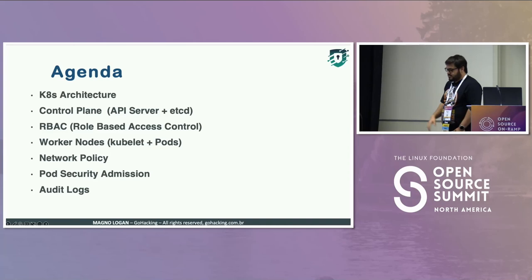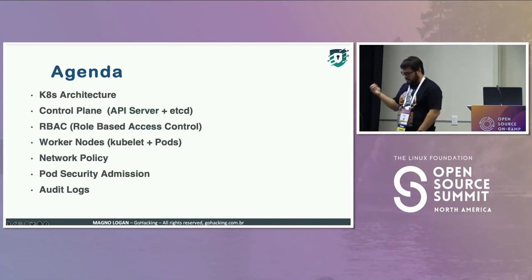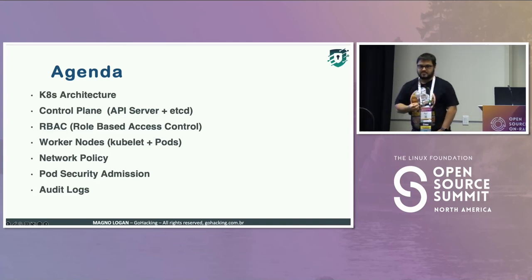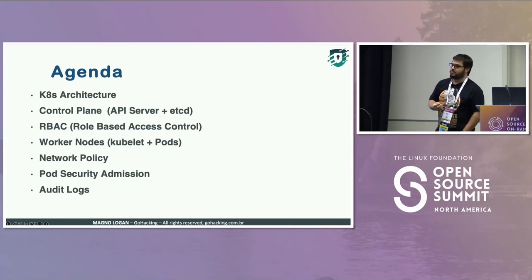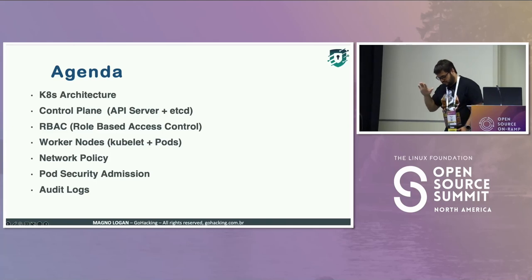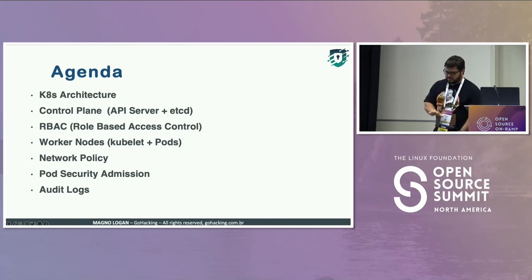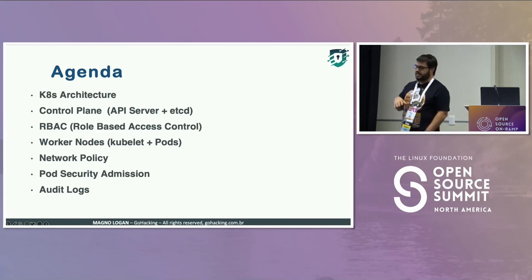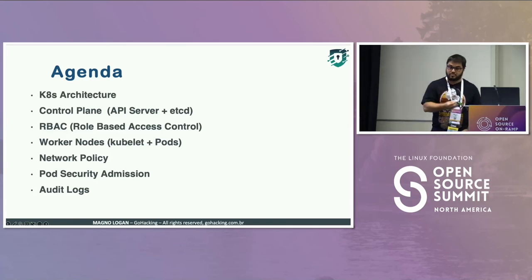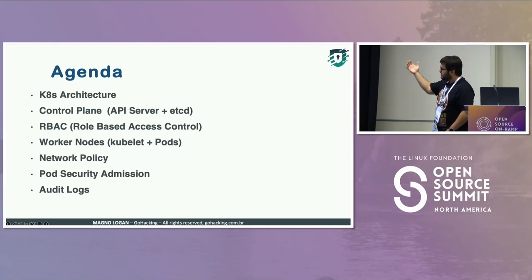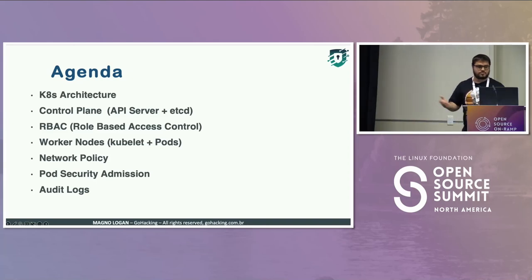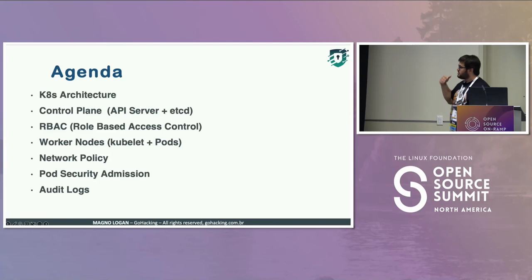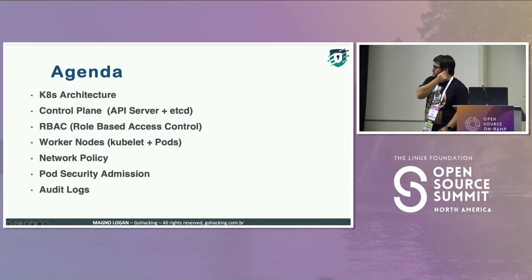So this is the agenda for today. Since this is the on-ramp talk, I'm going to talk from scratch — understanding the components of a Kubernetes cluster, and then we'll talk about security. We're going to cover the architecture, control plane, worker nodes, and things like that.